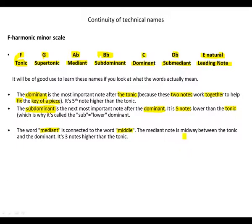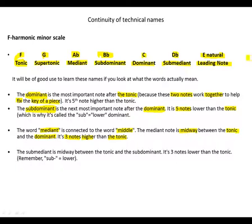The mediant note is midway between the tonic and the dominant. It's three notes higher than the tonic. The submediant is midway between the tonic and subdominant. It's three notes lower than the tonic.